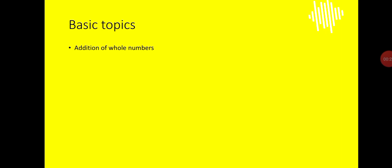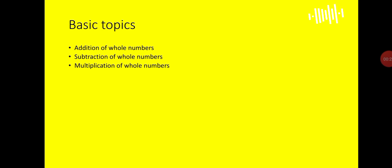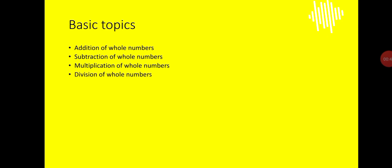First of all, addition of whole numbers, which is very basic. Subtraction of whole numbers. Multiplication of whole numbers — right at the beginning of JHS, if you do not know the multiplication table, you should at least know from the 2 times table to the 9 times table. Then division comes. If you're a student who is struggling with division, your addition, subtraction, and multiplication should be good before division.